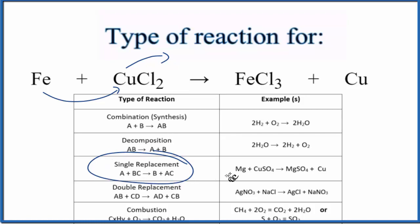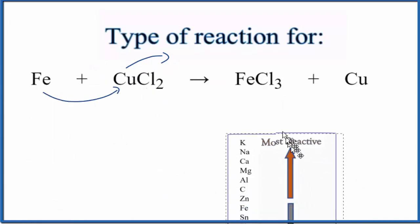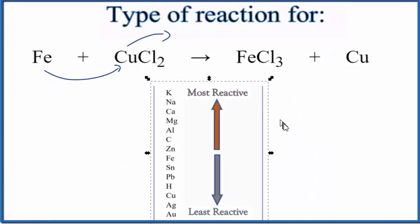So for a single replacement reaction, to tell whether it happens, if it actually takes place, we need to look at the activity series here of the metals. So here's our activity series. And as we go down, here's iron right here, and here's copper.